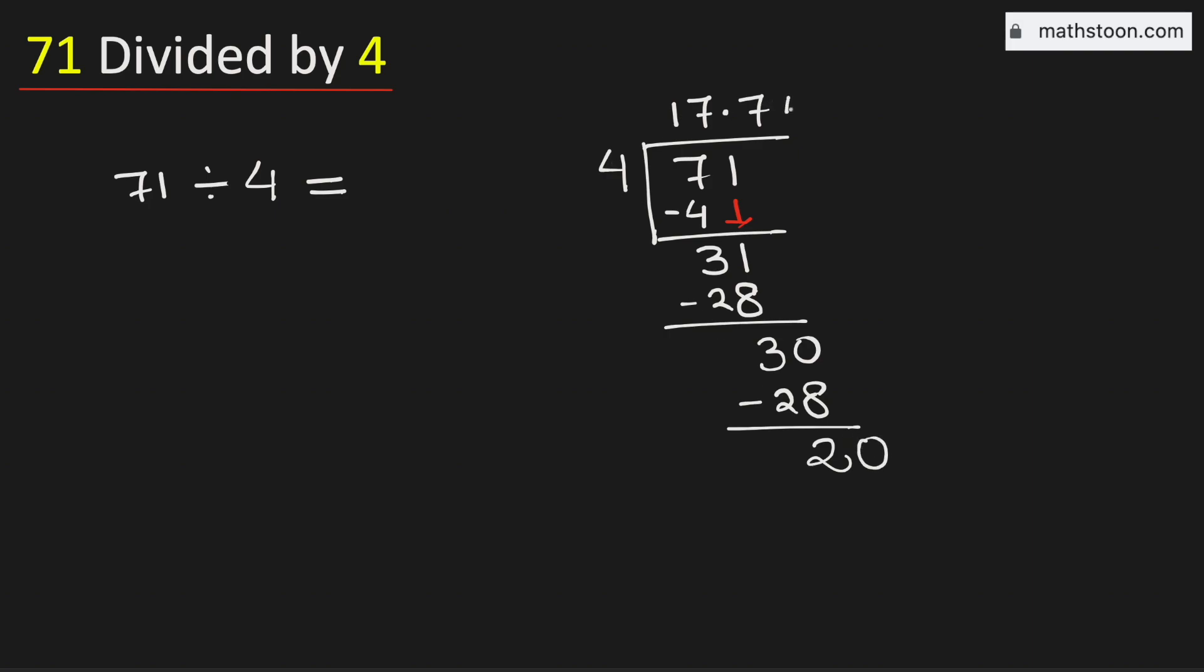And we know that 4 times 5 is 20. Subtract, we get 0. As we have obtained the number 0, so we will stop.